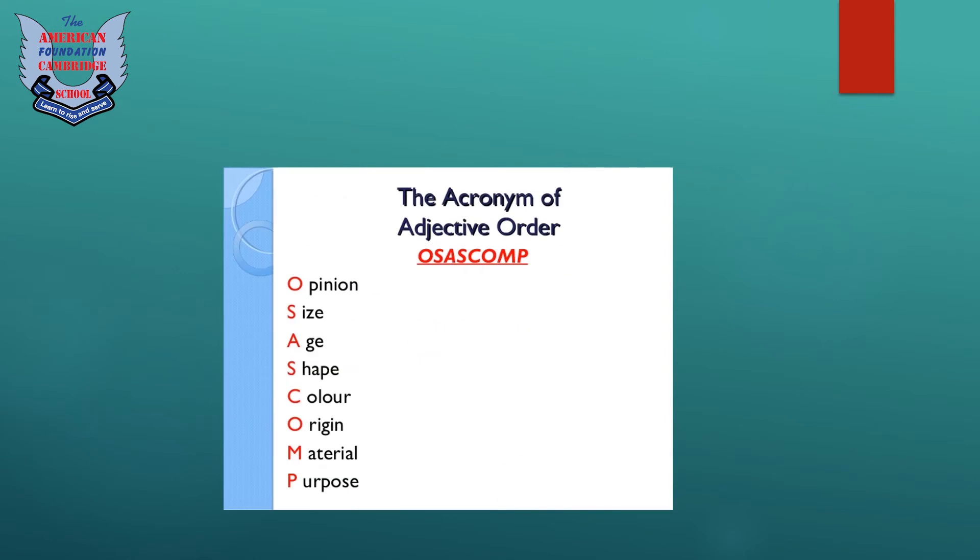Now what is the rule and what is the order? Adjective order. The capital letters written in red are the short forms or you can say a shortcut to learn the order: O-S-A-S-C-O-M-P. O for opinion, S for size, A for age, S for shape, C for color, O for origin, M for material, and P for purpose. Students, you have to learn this order because according to this order we are going to arrange the adjectives in front of a noun or in a sentence.